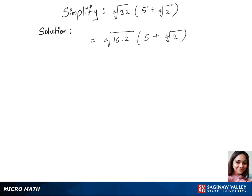In our next step, we'll separate the 4th root in our first part, which is 4th root of 16 times 4th root of 2, times the bracket which remains the same: 5 plus 4th root of 2.